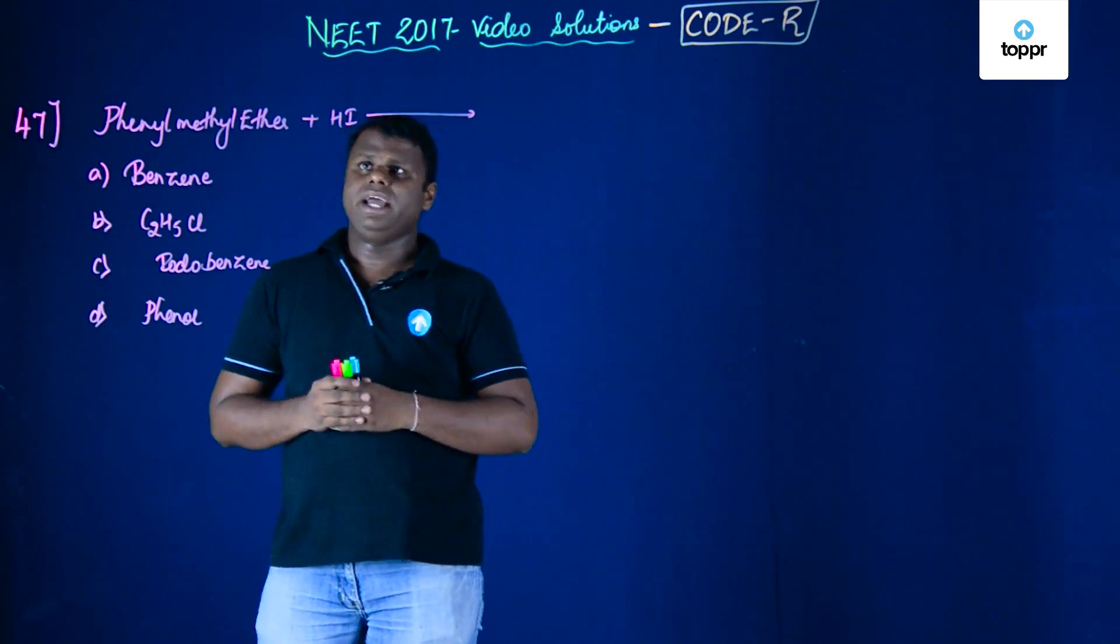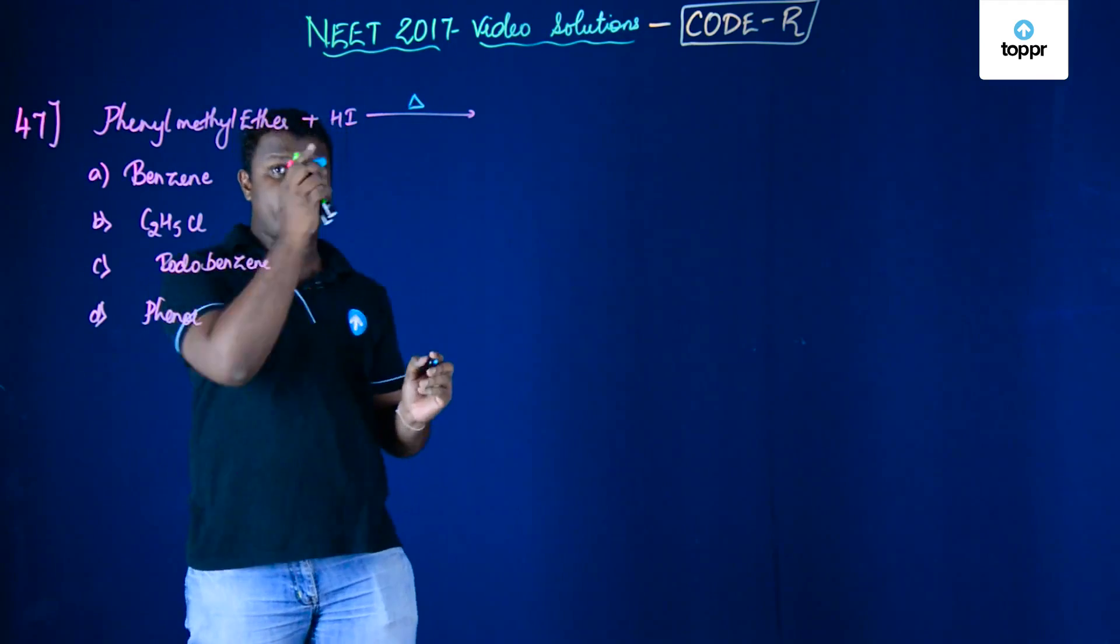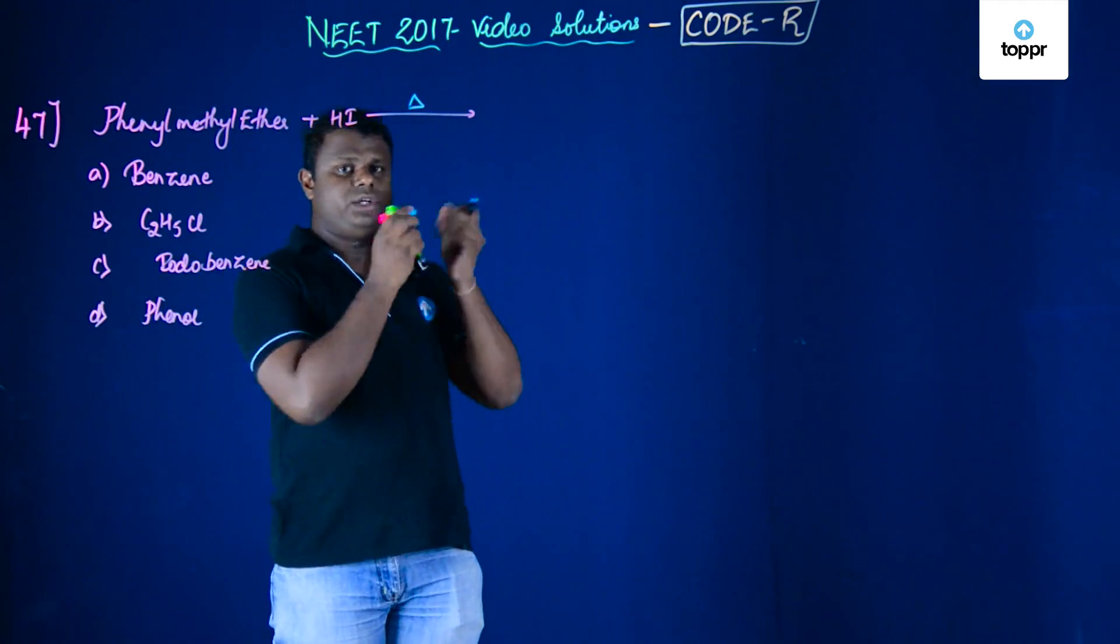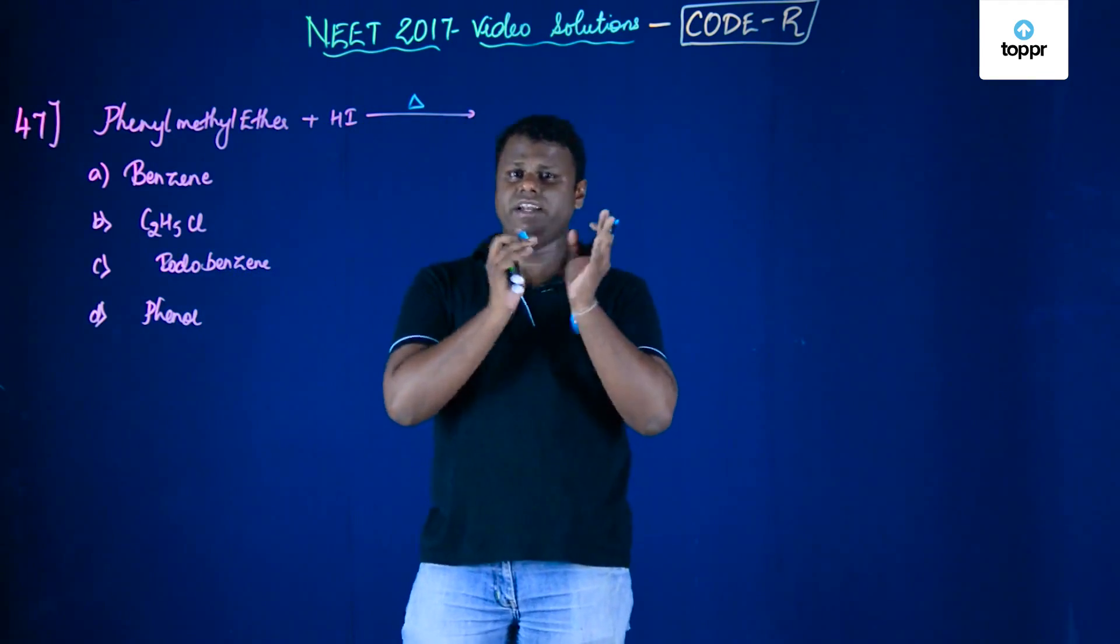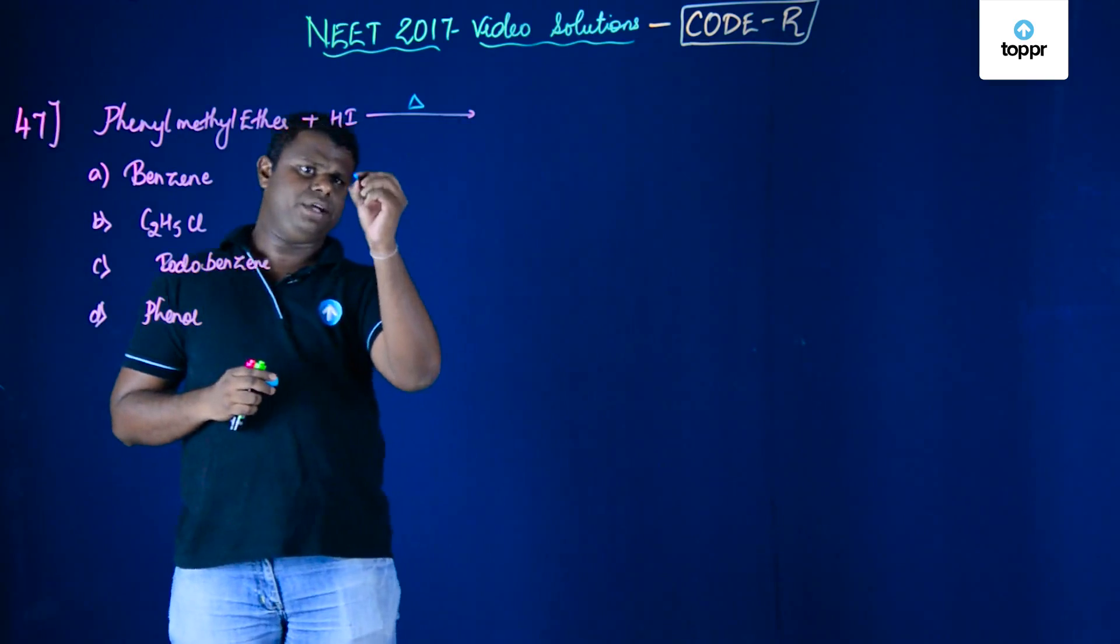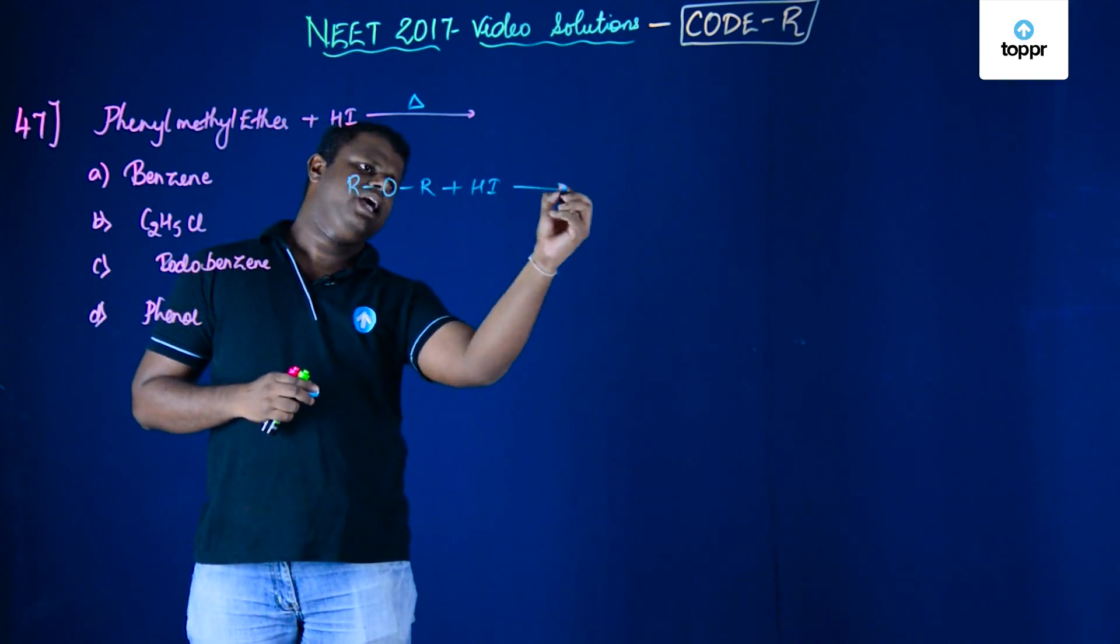Phenylmethyl ether on heating with HI. The question can be a little bit complicated because it is written at high temperature. You might just get into this sort of distraction that what exactly happens when it is a high temperature reaction? You normally have an ether which on heating with HI, what exactly happens?